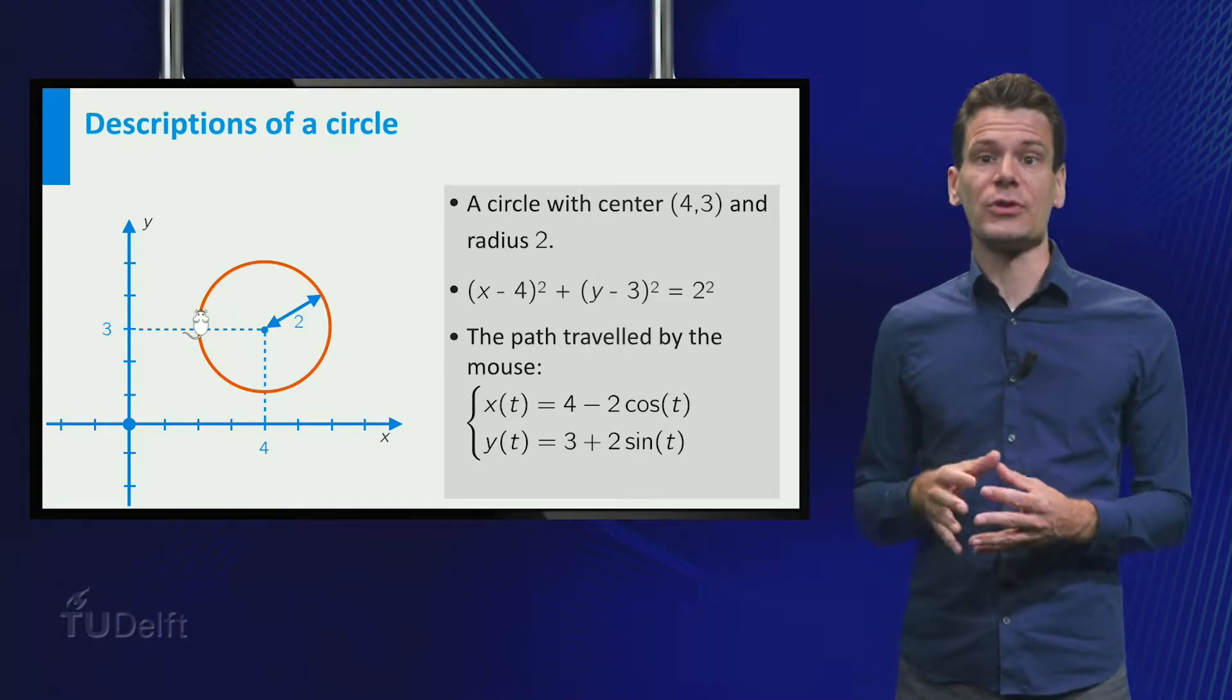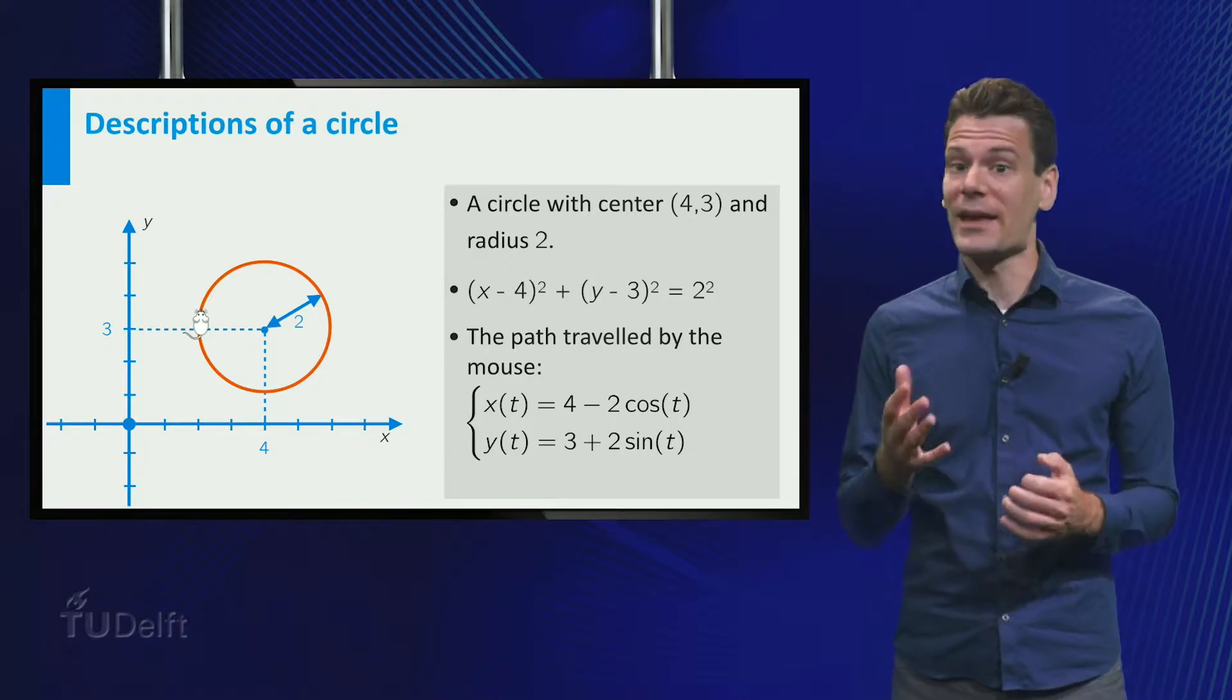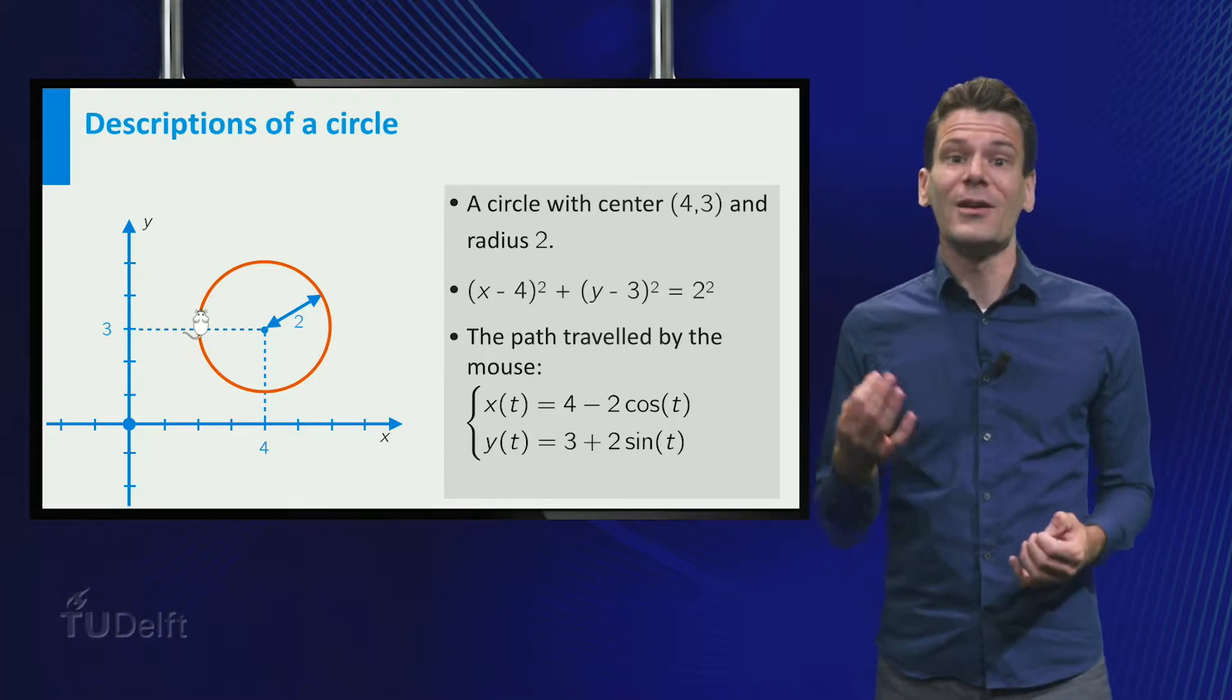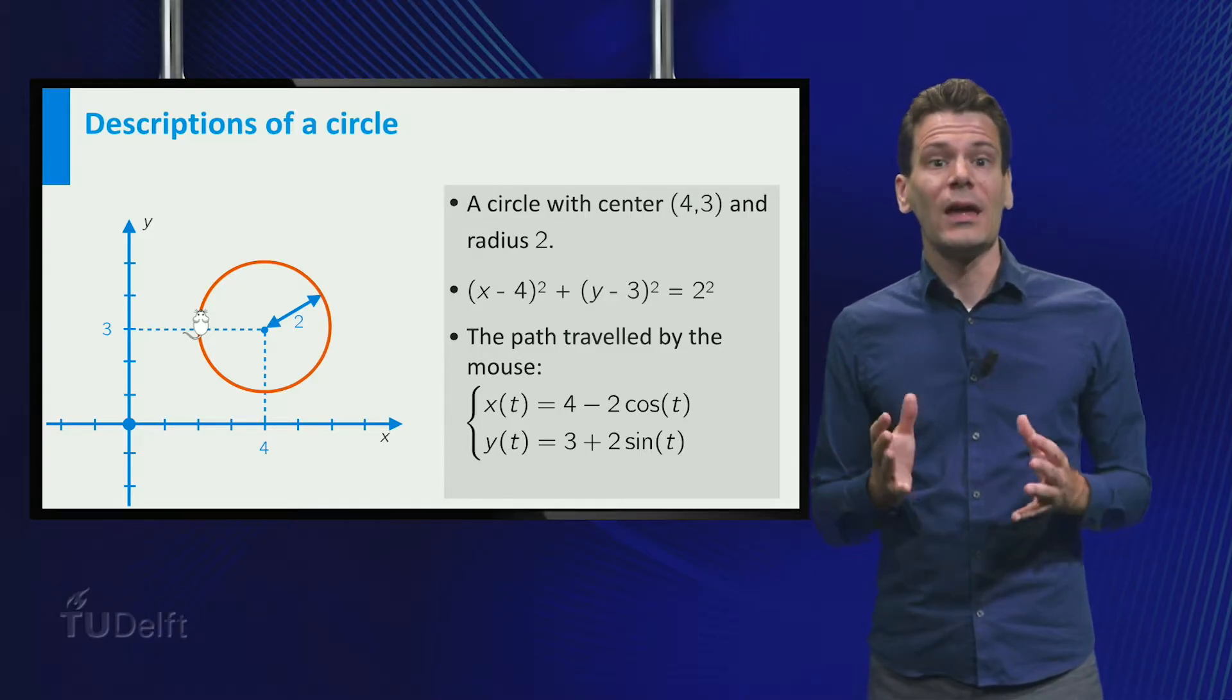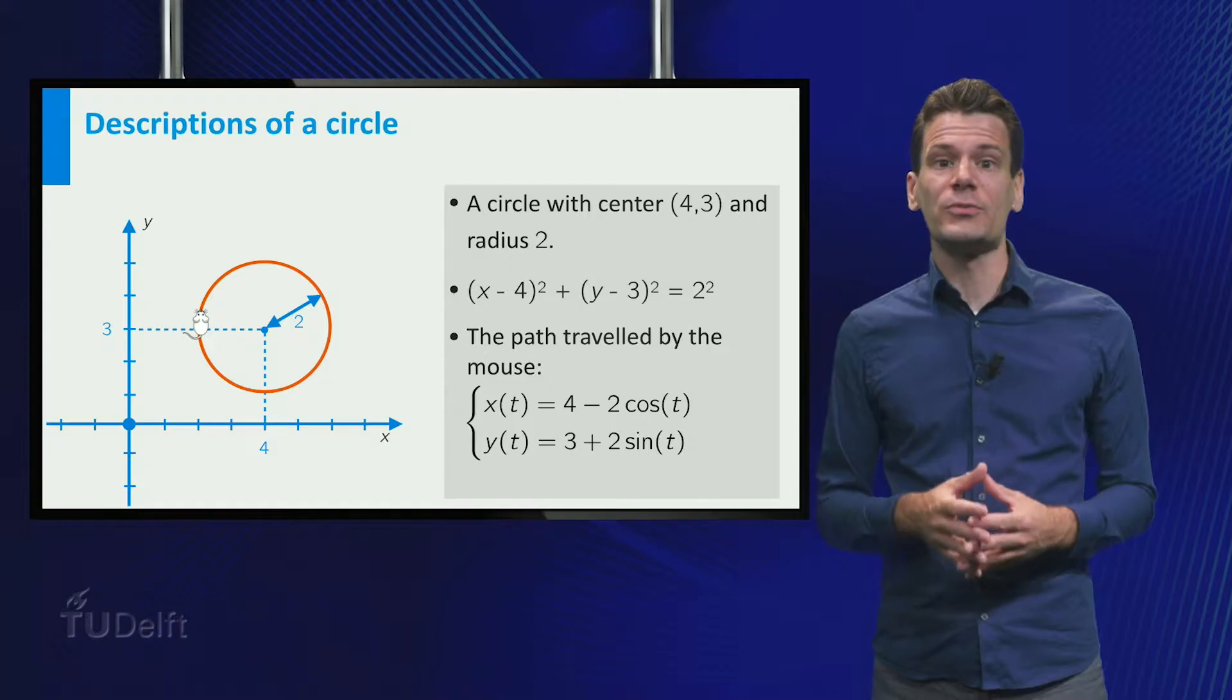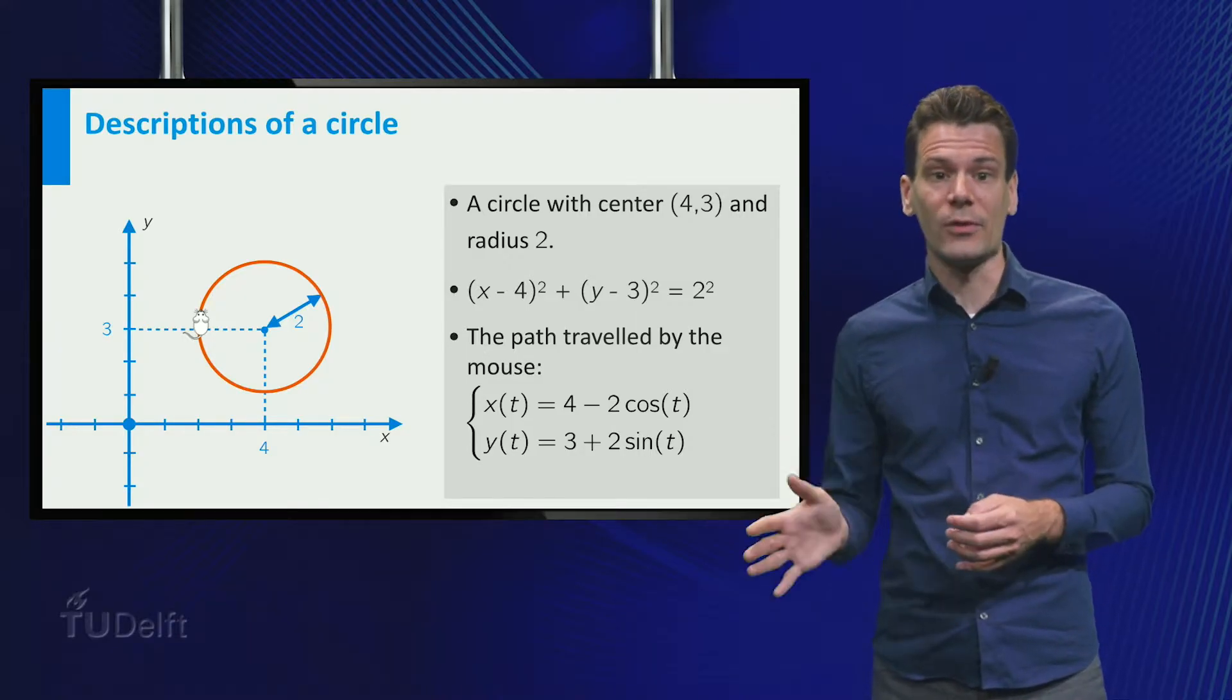If our mouse loops the circle exactly once, we can regard the positions of this mouse as the collection of points on the circle, and therefore we can say that our formulas describe the circle as well. To make sure that the mouse only loops the circle once, we have to restrict the values of t to the interval.